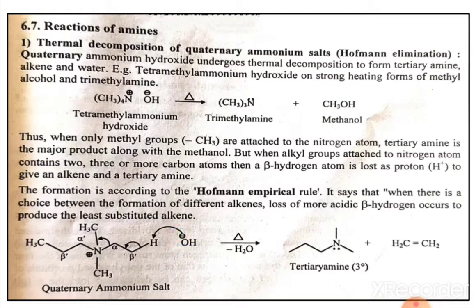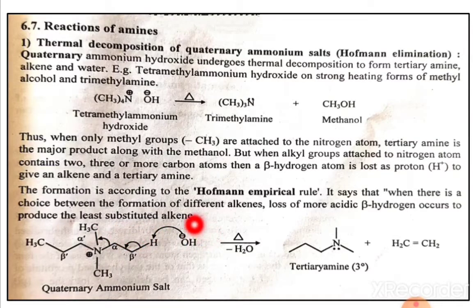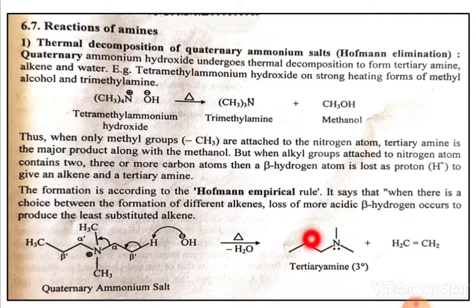In the quaternary ammonium salt structure, adjacent to the nitrogen we label alpha, beta, alpha-dash, and beta-dash positions. The OH⁻ ion abstracts the beta proton. This causes a bond shift, and the carbon-nitrogen bond cleaves, giving the alkene and the tertiary amine. So we get tertiary amines along with the least substituted alkene as the product.